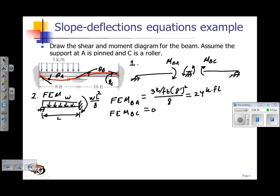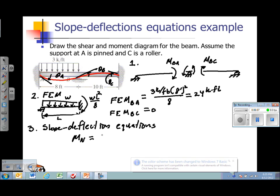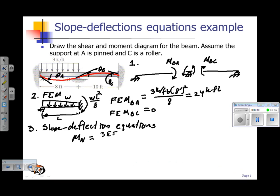Step 3 is to write down the slope deflection equations. The moment of the near side is going to be equal to 3EI over L times theta near minus the chord rotation, which we're not going to worry about in this case because we don't have any differential displacement of the supports, plus the fixed-end moment at the near side.